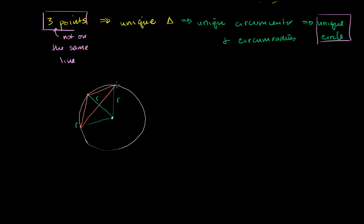If a point is equidistant from two other points — as we proved in a previous video — it must be on the perpendicular bisector of the segment that joins those two points. So labeling the vertices A, B, C: point O is equidistant from C and B, so it must be on the perpendicular bisector of BC. It's also equidistant from A and B — both a radius away — so it must also sit on the perpendicular bisector of AB. And similarly, O is equidistant from A and C, so it must be on the perpendicular bisector of AC as well.